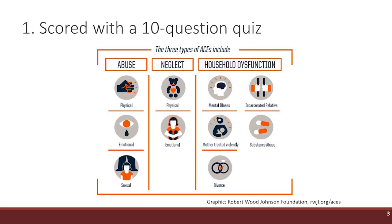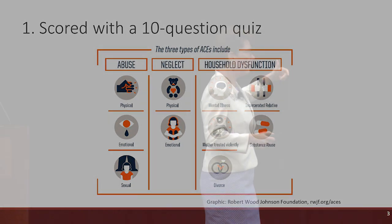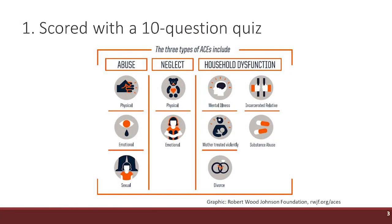ACEs fall into two basic categories. On one hand, you've got abuse and neglect — whether it's physical, emotional, or sexual abuse, or neglect — that's half of the equation. Unfortunately, what people tend to assume is that that's the entire equation. But there's another half that we call household dysfunction: experiences that children have in their homes, such as substance misuse, a parent who's been incarcerated, divorce, or domestic violence. Put them all together and those are our 10 ACEs.